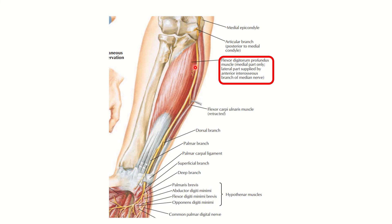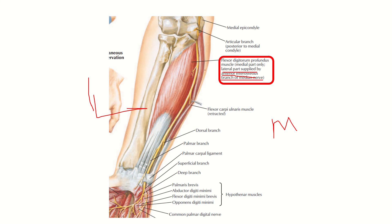On the medial side, the medial part of the flexor digitorum profundus is supplied by the ulnar nerve. So the flexor digitorum profundus is supplied by both the median and ulnar nerve. Specifically, the lateral part is supplied by the anterior interosseous nerve, which is a branch of the median nerve, and the medial part is supplied by the ulnar nerve.